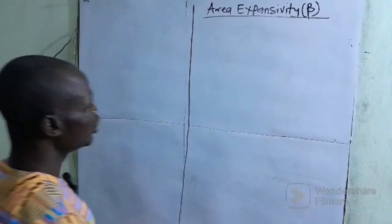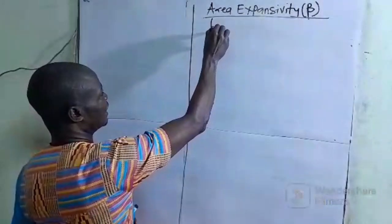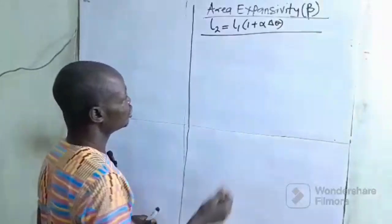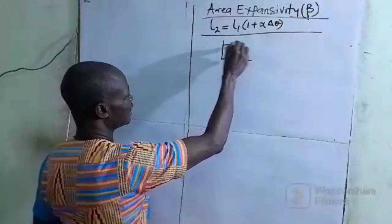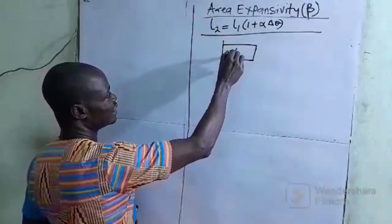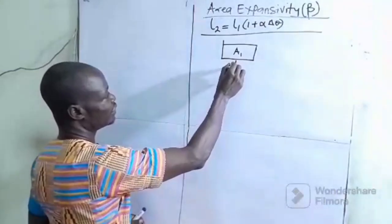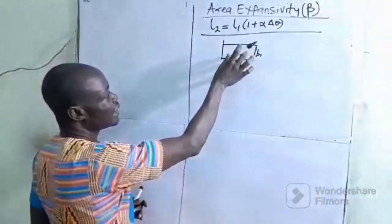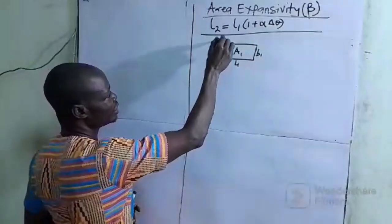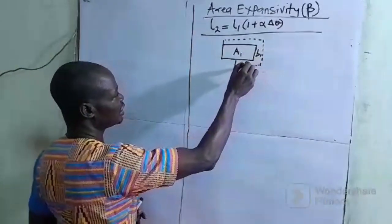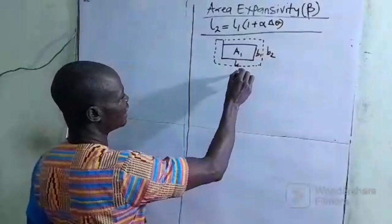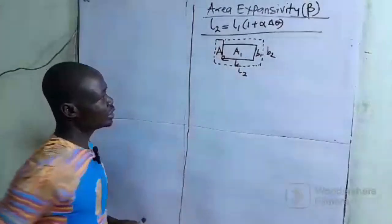Earlier we already generated an expression for the linear expansivity. Now if we have a plate like this, the original area has L1 and B1 as the original length and breadth. If we happen to heat this plate, it is going to increase in length as well as in breadth, so we are going to have B2 and L2 as well as area A2.